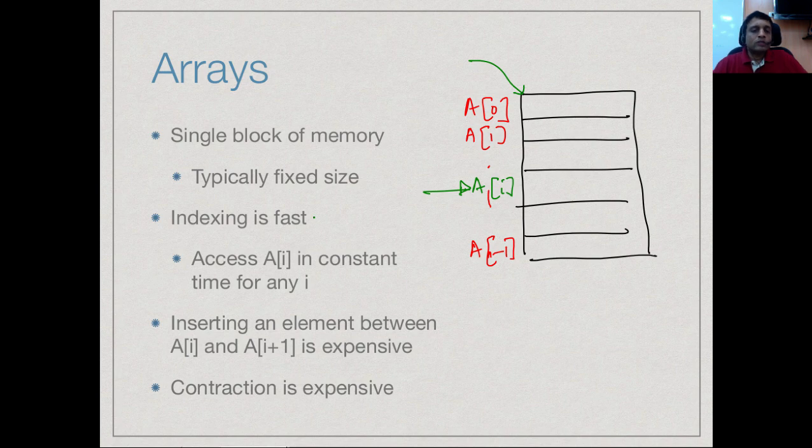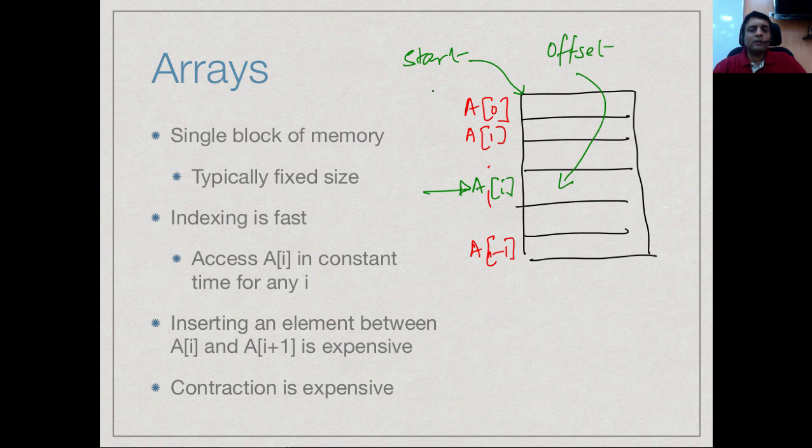This amounts to saying that we can access any value a[i], any position i in the array, in constant time regardless of whether i is at the beginning or at the end because we just have to compute the offset. We have the starting position and then given i we can compute directly in one shot, just doing arithmetic with respect to the starting address, the position of a[i].